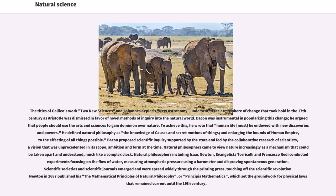Natural philosophers including Isaac Newton, Evangelista Torricelli and Francesco Redi conducted experiments focusing on the flow of water, measuring atmospheric pressure using a barometer and disproving spontaneous generation. Scientific societies and scientific journals emerged and were spread widely through the printing press, touching off the scientific revolution. Newton in 1687 published his The Mathematical Principles of Natural Philosophy, or Principia Mathematica, which set the groundwork for physical laws that remained current until the 19th century.